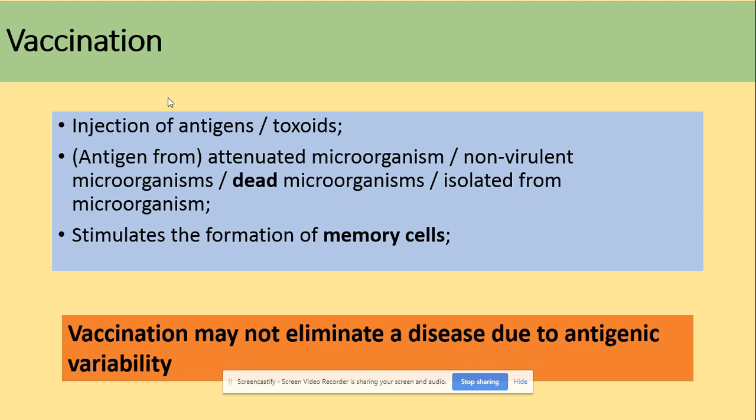Vaccination might not eliminate a disease due to many different antigens. An antigen is the foreign protein found on the pathogen, and as a protein it has a specific 3D tertiary structure. If a mutation — a change to the sequence of DNA bases — takes place, a different sequence of amino acids will be coded, affecting the specific 3D structure of the antigen. If you are later exposed to this mutated antigen, the antibodies your body produced initially will not be complementary and won't lead to destruction of that mutated antigen.